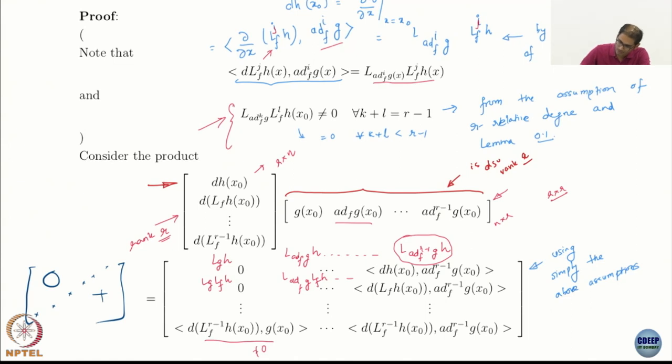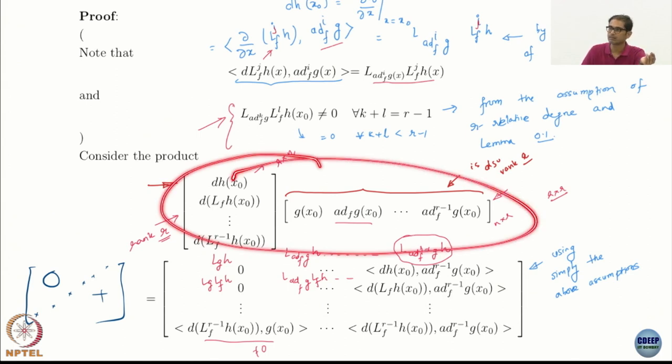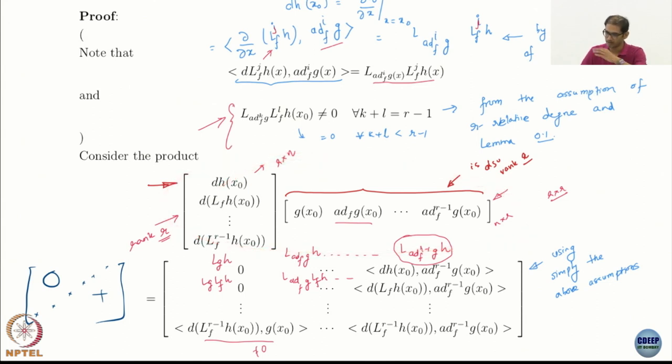So, what is this matrix we are multiplying? We took all the row vectors we had and stacked them, so I got an r by n matrix - r rows and n columns because partial of h with respect to x will have n columns. And I multiply it with these guys, you start seeing all the add notation here. This is an n by r matrix because each term is a vector field. The product is an r by r matrix, it is a square matrix. Deliberately done, very deliberately constructed.